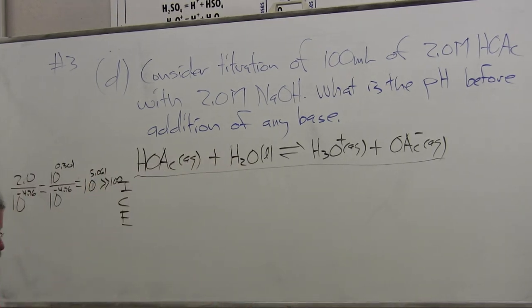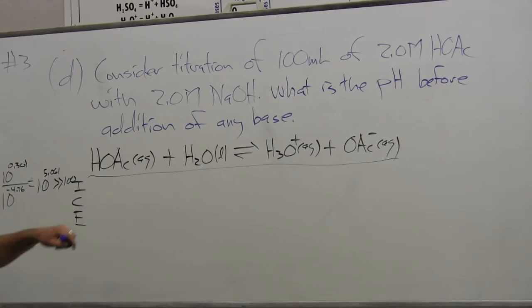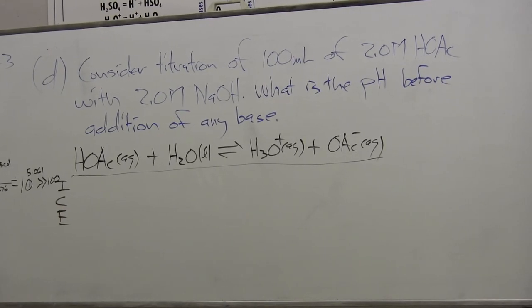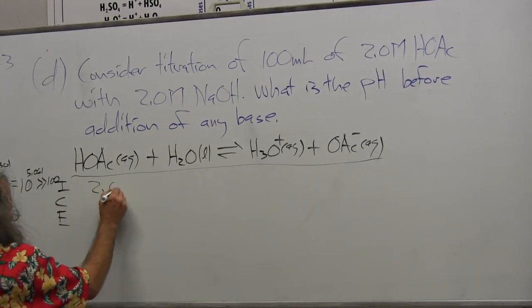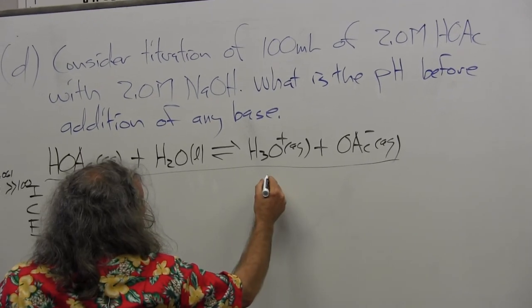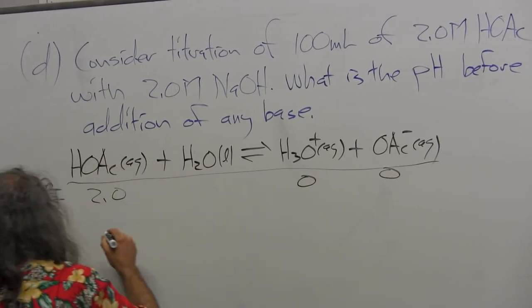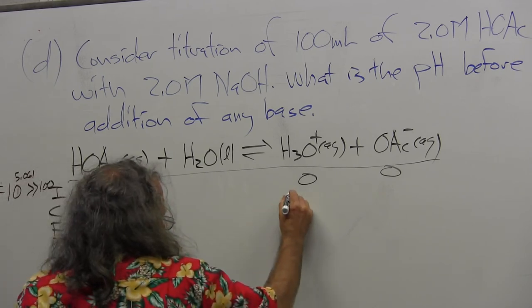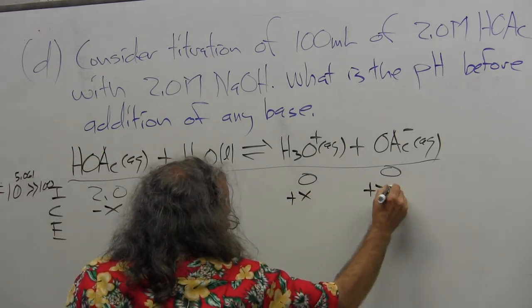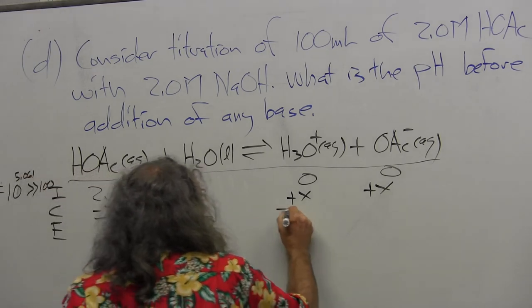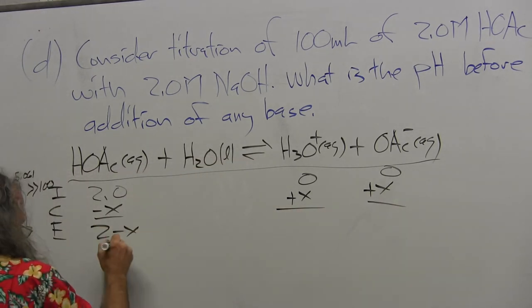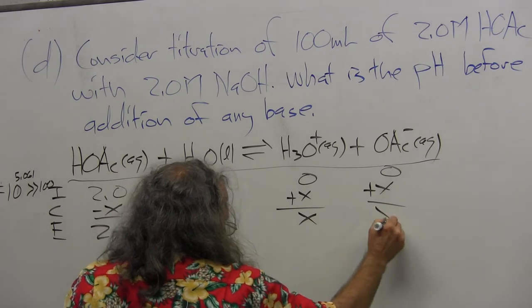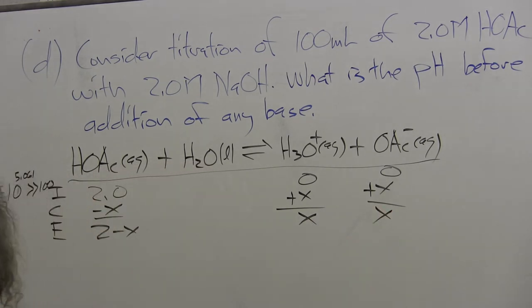ICE. Now, what's my initial concentration? 2.0. What's this? 0, 0, 0. And the change is? Minus X. Plus X. Plus X. 2 minus X. X squared. X and X.